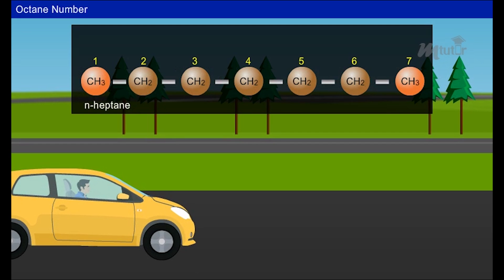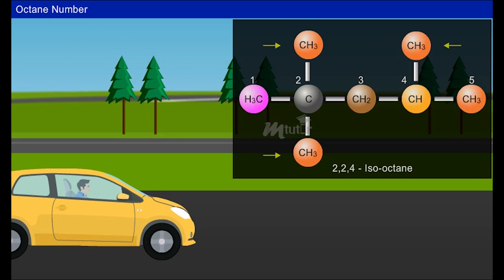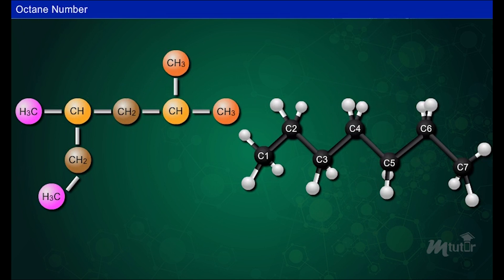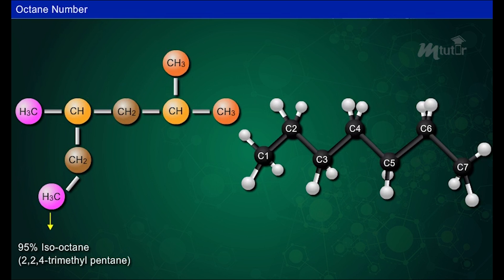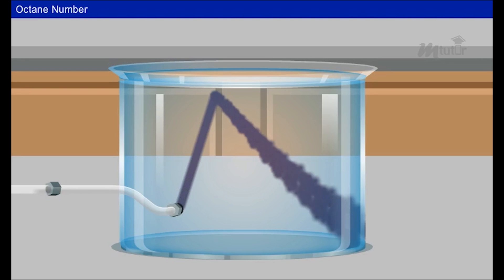The octane number of gasoline is a measure of knocking tendency. N-heptane knocks very badly and hence its anti-knock value has been arbitrarily given zero. On the other hand, isooctane gives very little knocking so its anti-knock value has been given as 100. Thus, if a sample of petrol gives as much knocking as a mixture of 95 parts of isooctane and five parts of n-heptane, then its octane number is taken as 95.